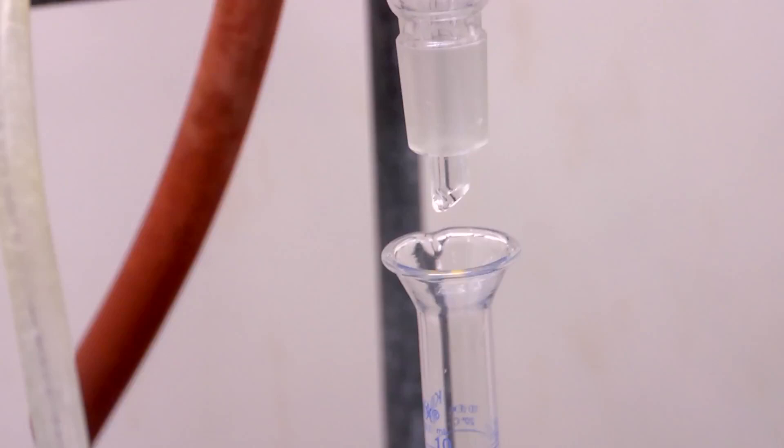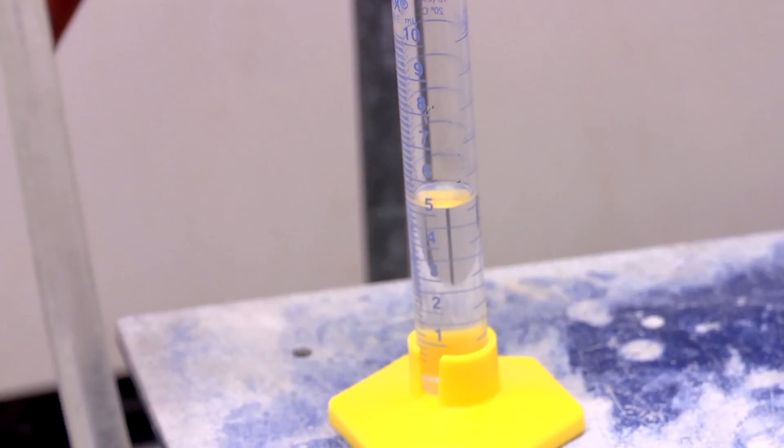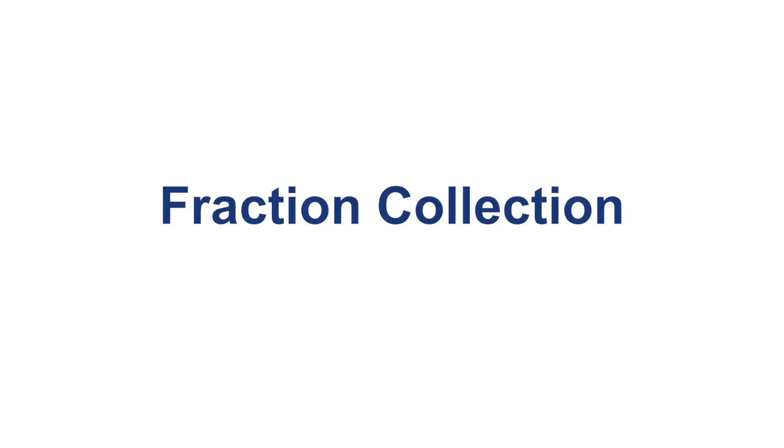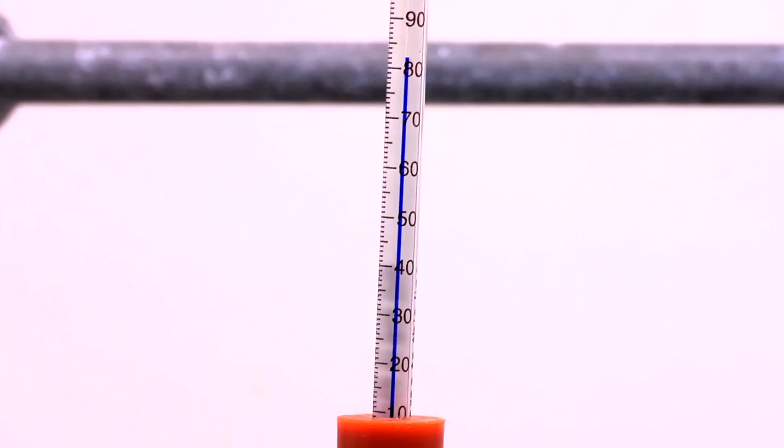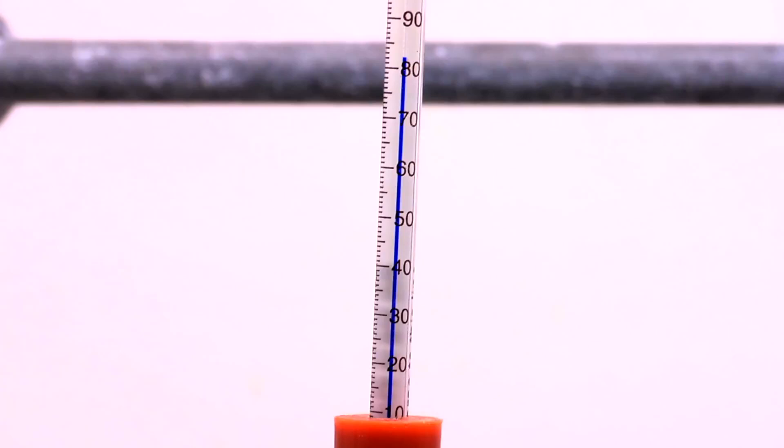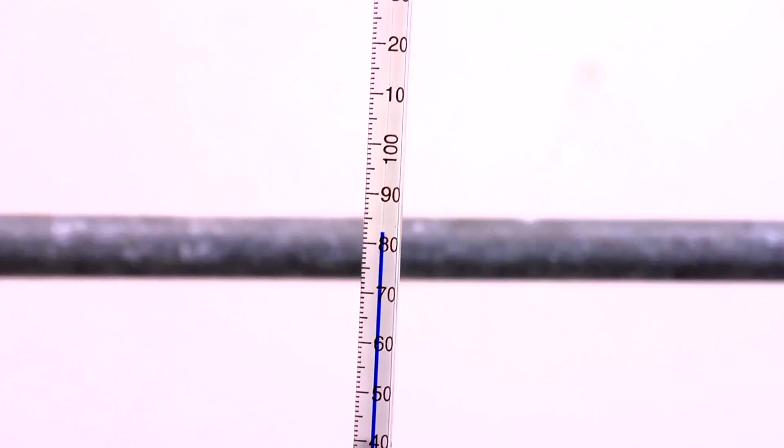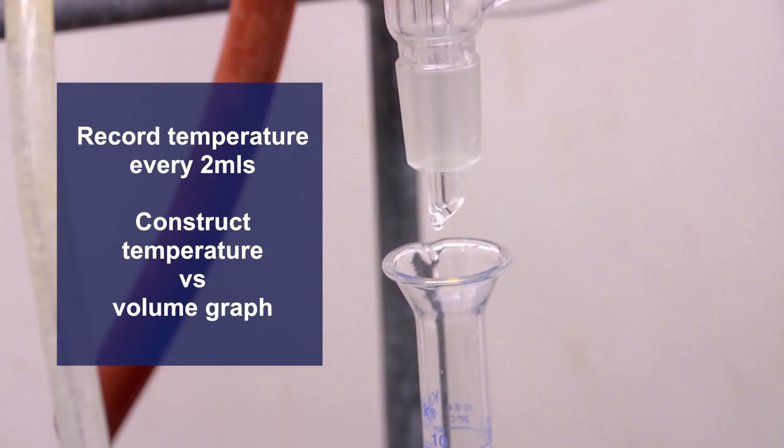Like simple distillation, product purity can increase by heating slower for a longer period of time and by performing subsequent distillations on the collected product. Watch as the temperature rises and condensation appears. Make sure to collect and record the temperature as the first drop of distillate is collected. From then on, you will record the temperature every 2 milliliters.